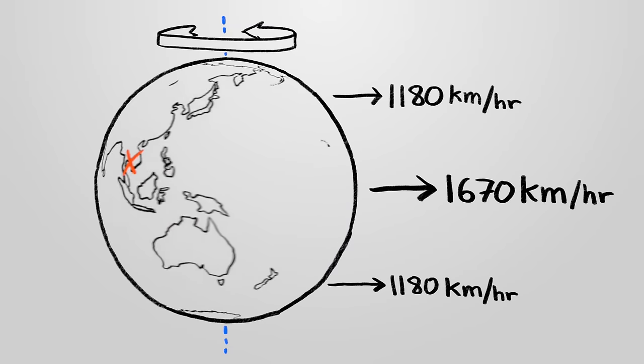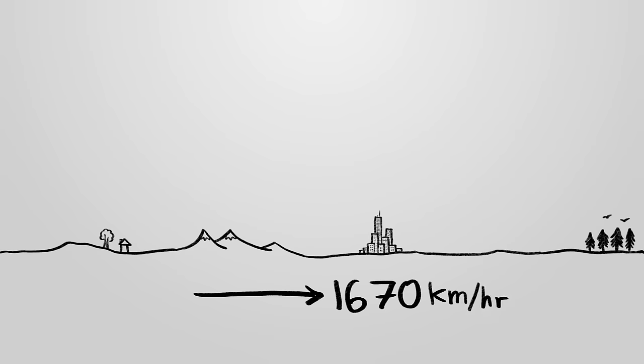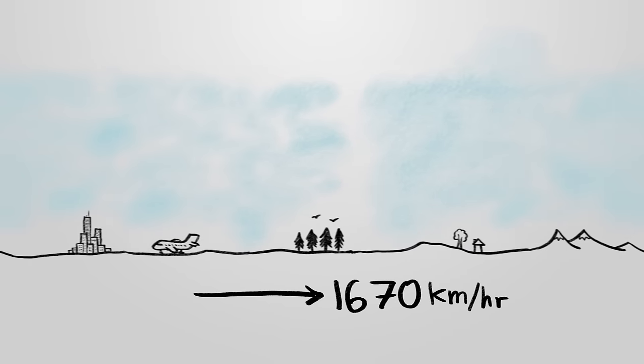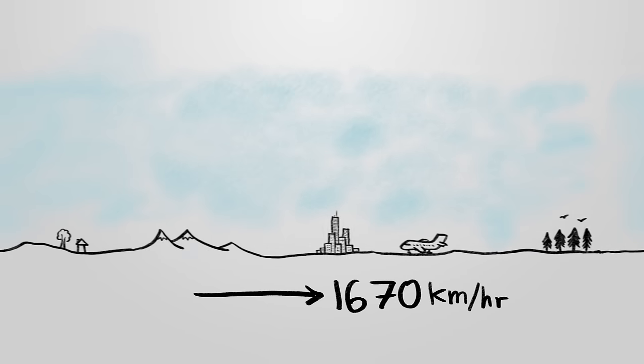At the same time, however, they are spinning away from their destination. When we say the Earth is going a thousand miles per hour to the east, that means that the ground, and airplanes on the ground, and even the air above the ground are all also moving a thousand miles per hour to the east.